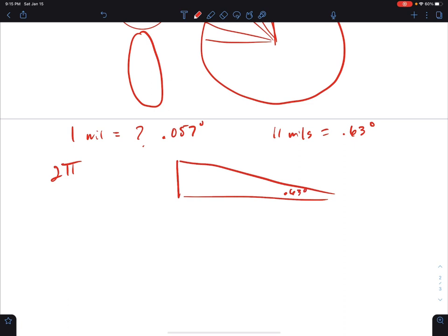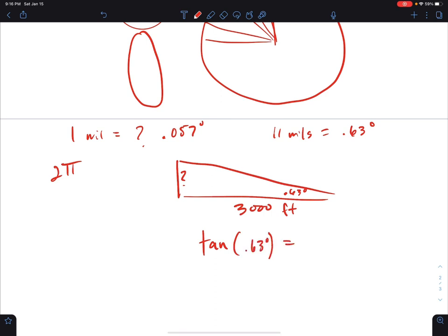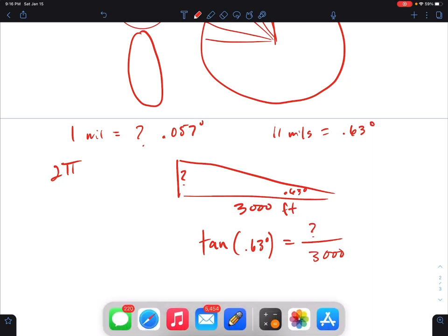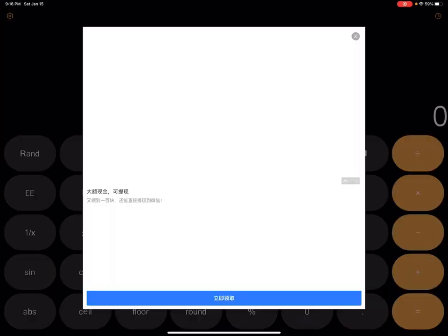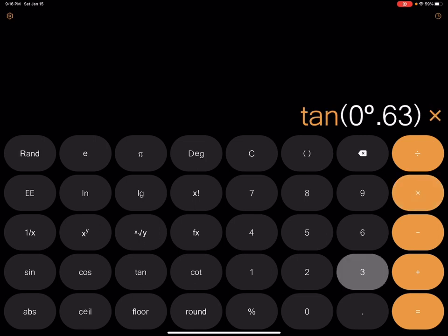This is 0.63 degrees, this angle here. This is going to be 3,000 feet. So we need to figure out what this side of the triangle is over here. So let's see, we're going to use tangent. So-ca-to-a. Opposite over adjacent. We want tangent. We do want tangent. So tangent times 0.63 degrees equals—we're going to cross multiply—call it question mark over 3,000. Let's try that. Tangent 0.63 times 3,000.